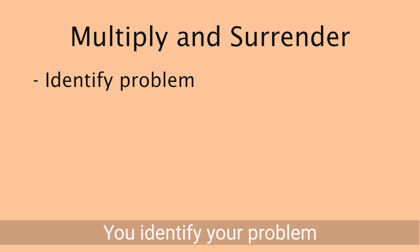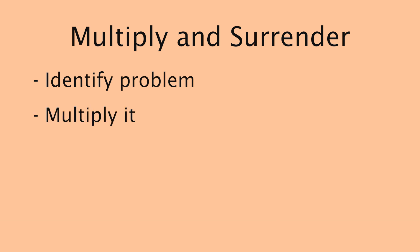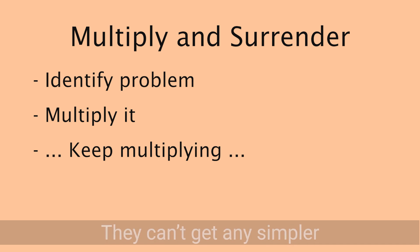Multiply and surrender follows simple steps. You identify your problem, then multiply it into more slightly simpler problems. You keep multiplying these problems until they can't get any simpler, at which point, you surrender.